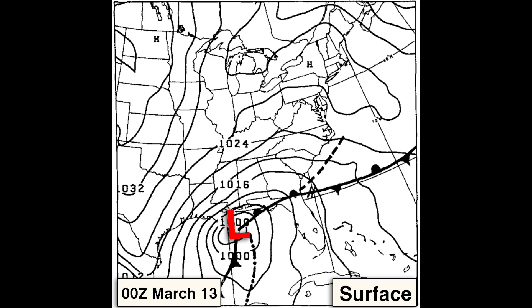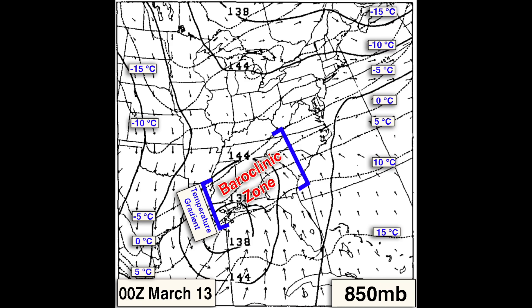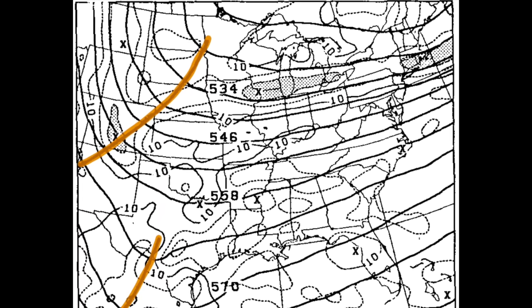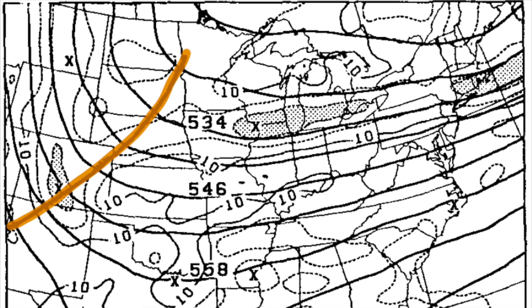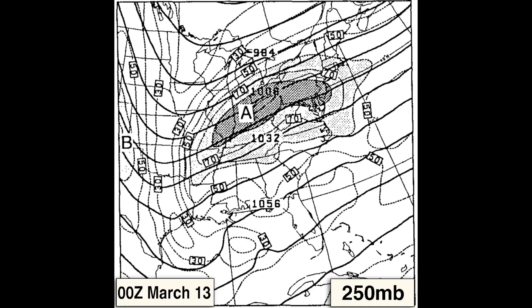As the low moved northeastward along the baroclinic zone, the warm, moist air mass made its way into the lower Mississippi Valley, deep south, and Florida. The contrast between the two air masses only strengthened the baroclinic zone further, which now extended across the entire northern Gulf of Mexico. An area of mid-level cyclonic circulation associated with the first upper-level trough continued to strengthen the low. However, it was the second upper-level trough that would cause the explosive development of the low later on.